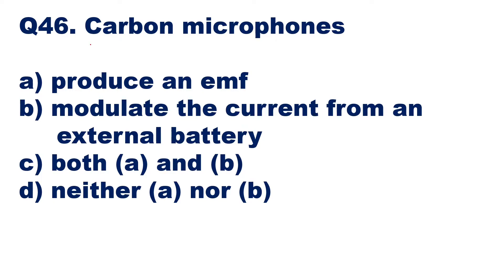Question 46: carbon microphone — options are: produces an EMF, modulates the current from an external battery, both A and B, or neither A nor B. In the carbon microphone, there is one movable electrode and one fixed electrode. Both electrodes have carbon granules.